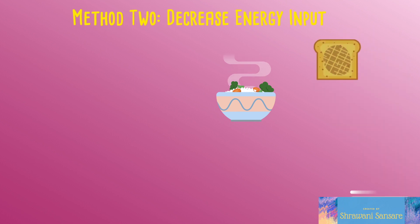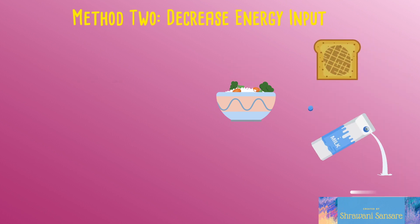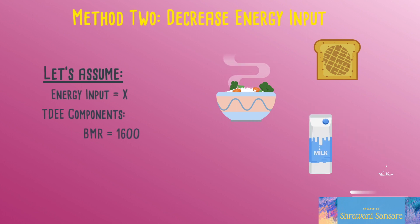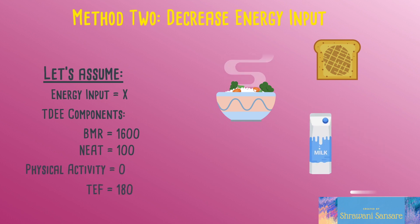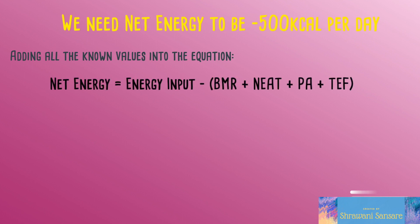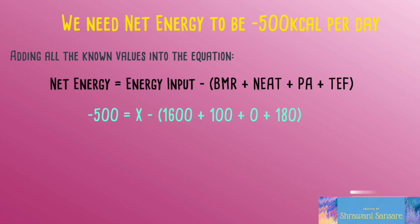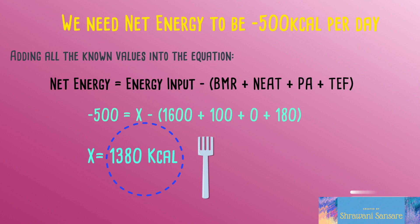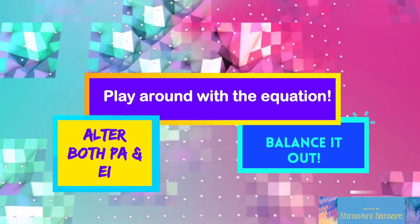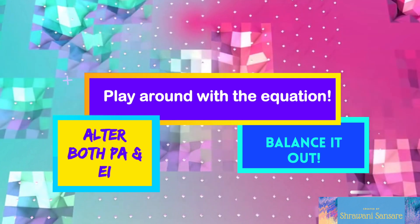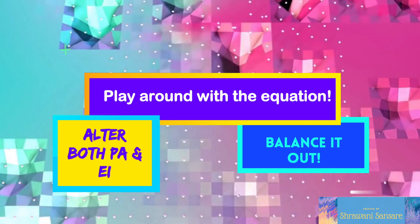The second method is to simply decrease energy input — the amount of food you consume. For this example, BMR is still 1,600, NEAT burns 100 calories, zero through physical activity since we're not exercising, and 180 through the Thermic Effect of Food. Again, net energy needs to be −500 calories per day. Solving the equation, X = 1,380 calories — that's the amount I need to eat to achieve my goal without doing any physical activity.